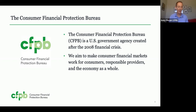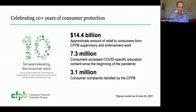The CFPB is a U.S. government agency created shortly after the 2008 financial crisis. Our agency aims to make consumer financial markets work for consumers, responsible providers, and the economy as a whole. In 2021, we celebrated our official 10-year anniversary as an independent government agency. Our supervisory and enforcement efforts resulted in approximately $14.4 billion in relief for consumers, over 7.3 million consumers accessed our COVID-19 educational content, and our Office of Consumer Response received and processed over 3.1 million consumer complaints.